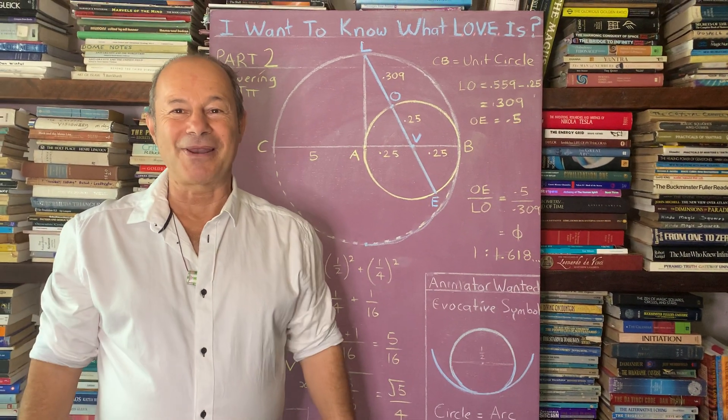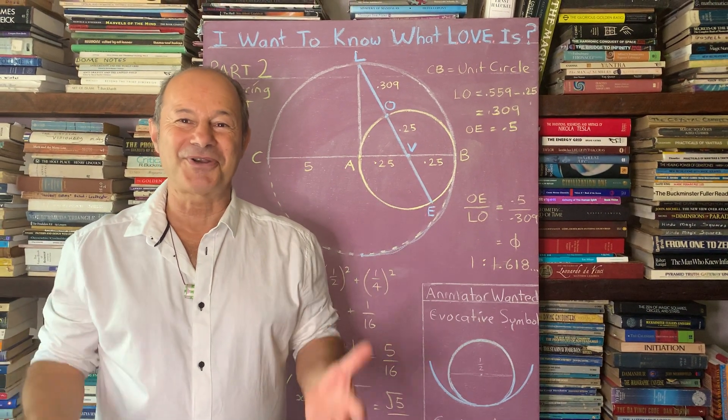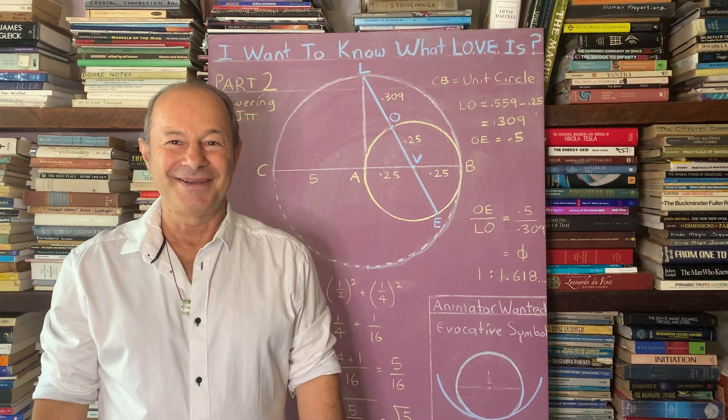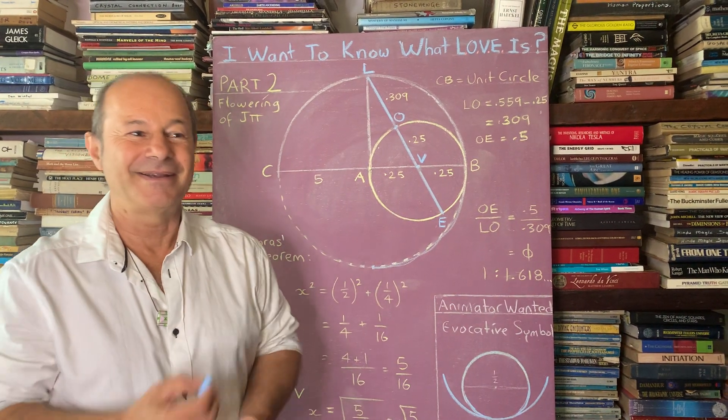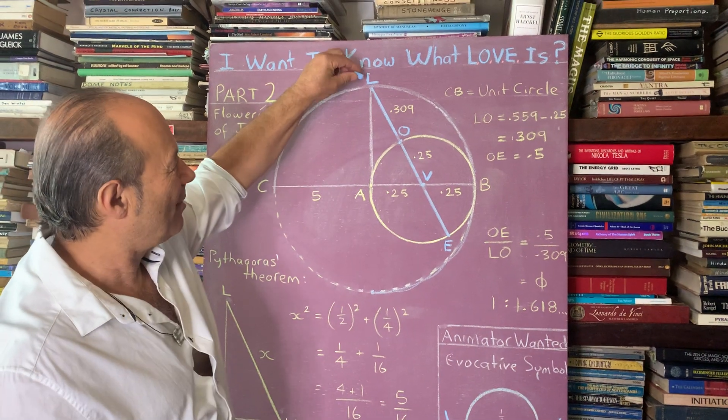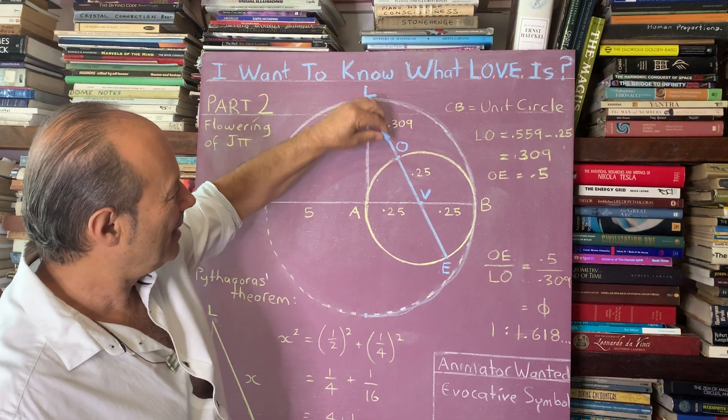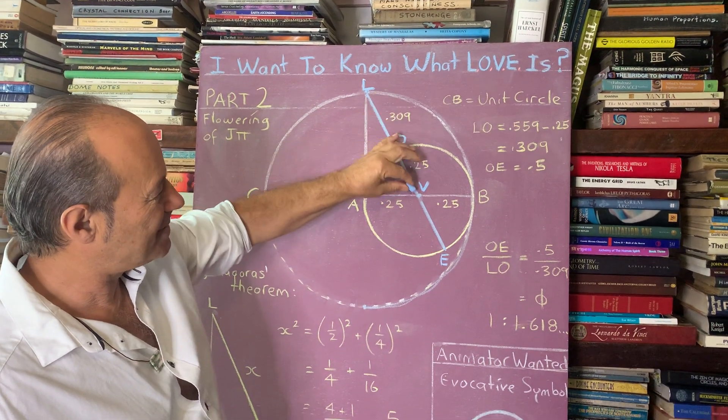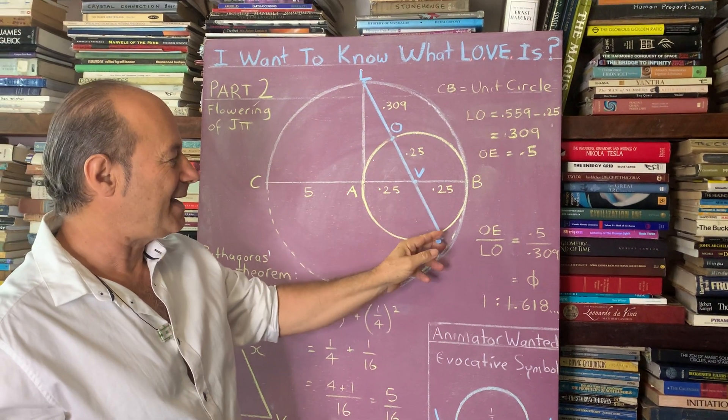I'm at this point in my life now where I just want to know what love is. So I decided to investigate and go on my journey. So here we have L, this point is L, and this point here is O, this is V, and this is E.